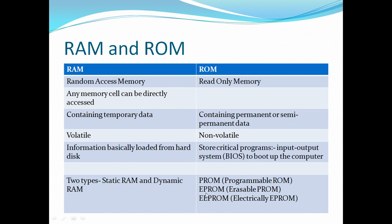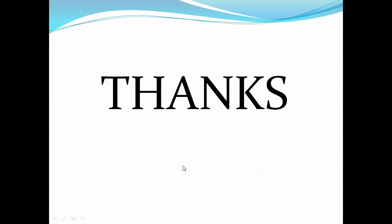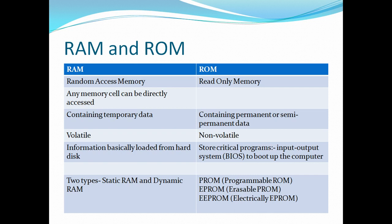Types of ROM include EPROM — erasable programmable read only memory — and EEPROM — electrically erasable programmable read only memory. Next time we will study static RAM and dynamic RAM and related techniques.